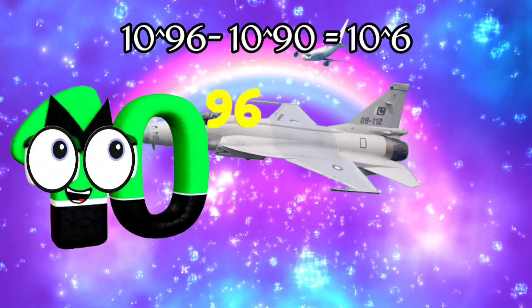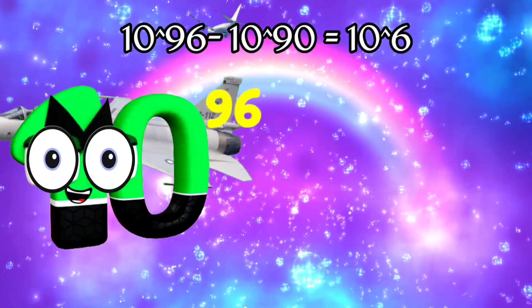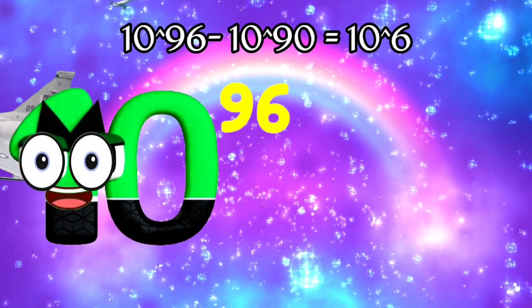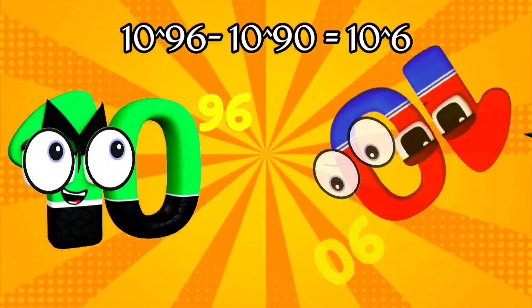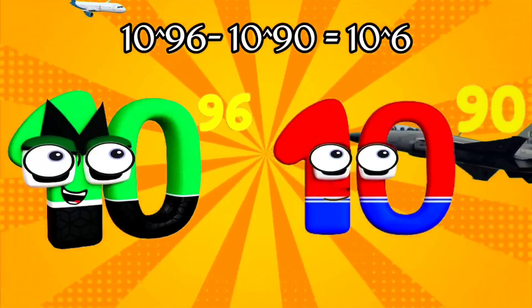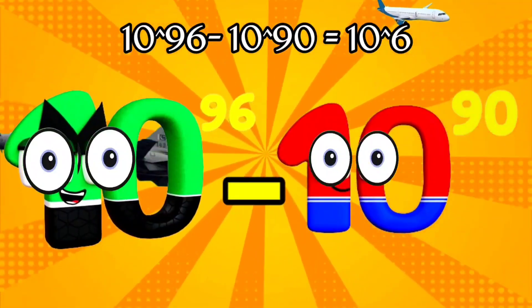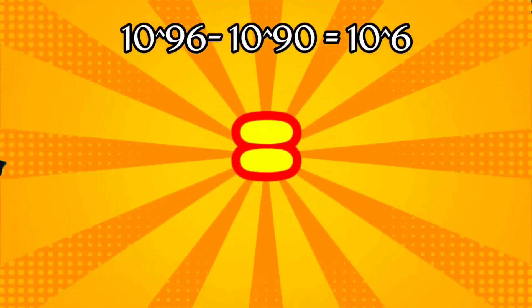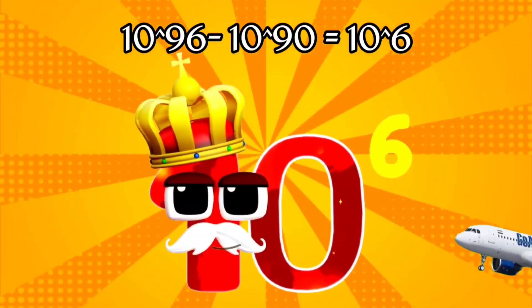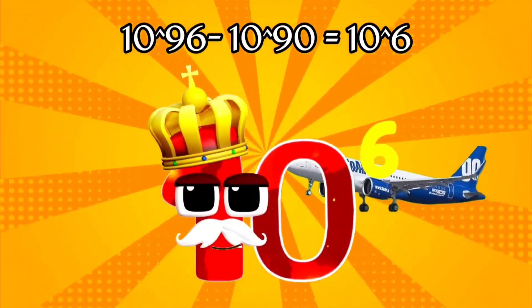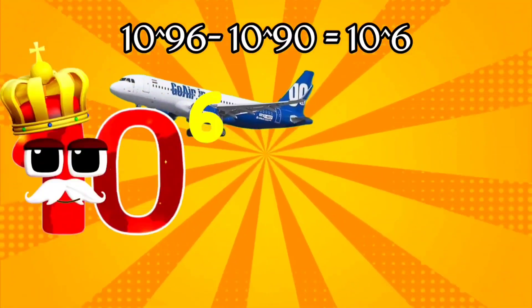Entrogyntillion. I'm Novemvigintillion, and I've got 90 zeros. Equals. I'm 1 Million, and I've got six zeros.